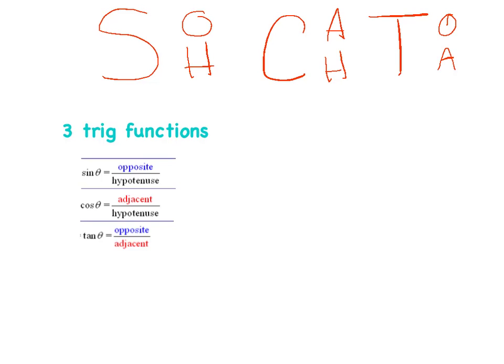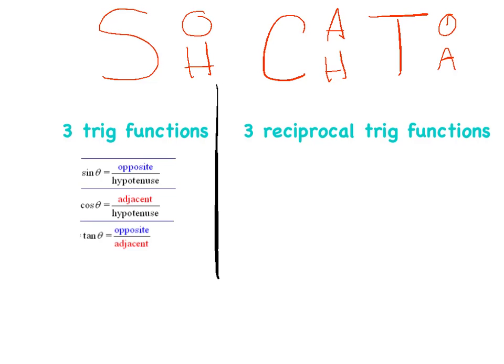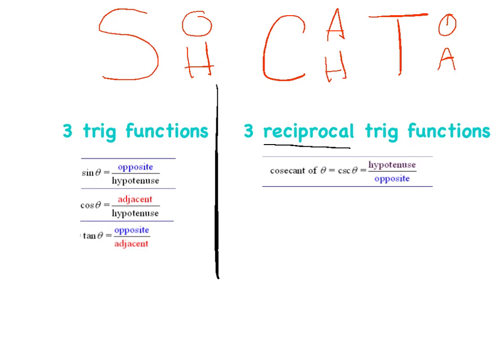Now our goal is to talk about three more trig functions — we'll call these the three reciprocal trig functions. The first is cosecant, abbreviated CSC. Let's write that out: cosecant is the reciprocal of sine.